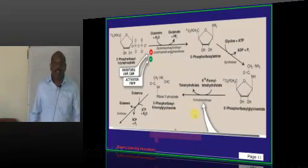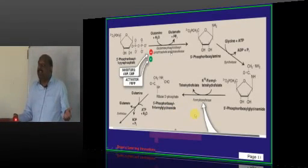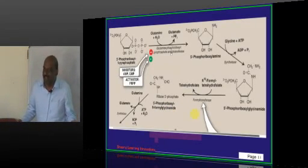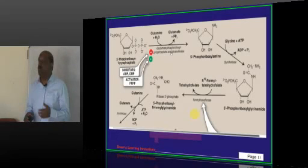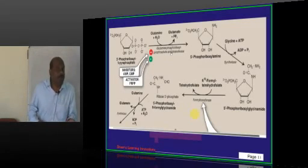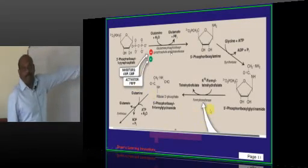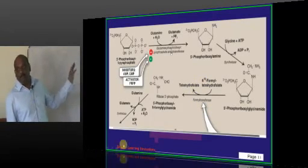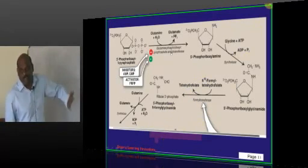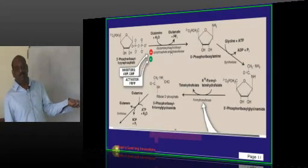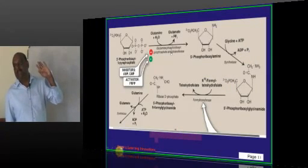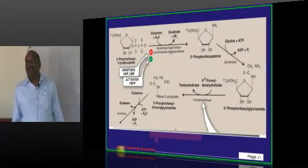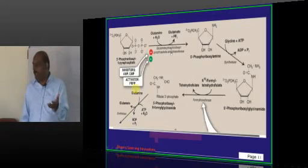Now, did you understand why if there is a folate deficiency, megaloblastic anemia is there? If there is no folate, tetrahydrofolate. If there is no tetrahydrofolate, N-formyl tetrahydrofolate cannot form. If it doesn't form, purine doesn't form. If purine doesn't form, DNA doesn't form. If the DNA doesn't form, only cytoplasm forms inside the RBC. Then what will happen? Megaloblastic anemia typically will result.